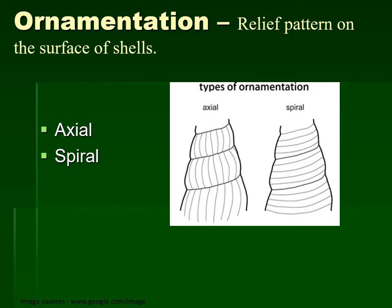Now if you look at the external surface ornamentation of gastropods — particularly ridges or relief on the shell surface — mainly two types of ornamentation are found. On their superimposition and different strength they form different patterns. The first type is axial ornamentation, which is basically parallel to the axis of coiling. If this is our gastropod shell and this is the axis of coiling, all these elements are parallel to the axis of coiling — that is why this type is known as axial ornamentation.